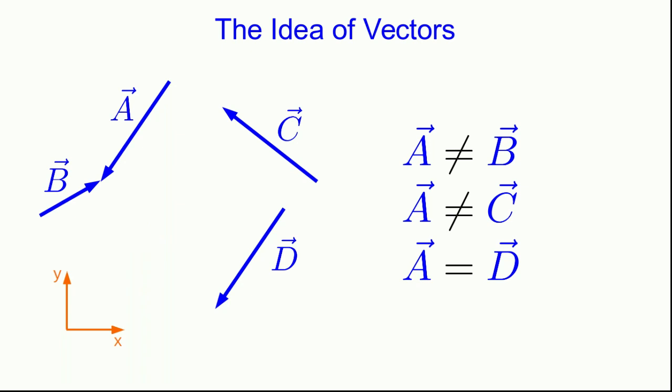And so in particular, if I move this vector B up here, so now it just happens to be pointing to the same location as the vector A, it's still not the same as the vector A. It points in a different direction, and it has a different length.